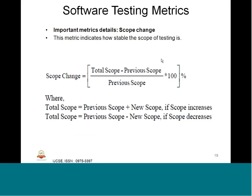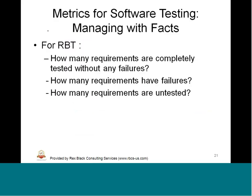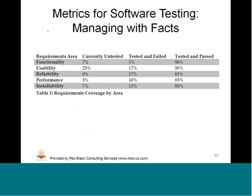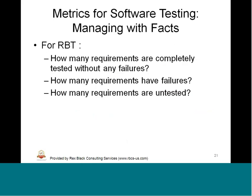That covers the software testing metrics. In the next session we will try to conclude about automation test metrics and how we are going to manage and report them — what are the trends, burn down charts, etc. — and with that we will try to complete the unit 3 session in the next lecture.